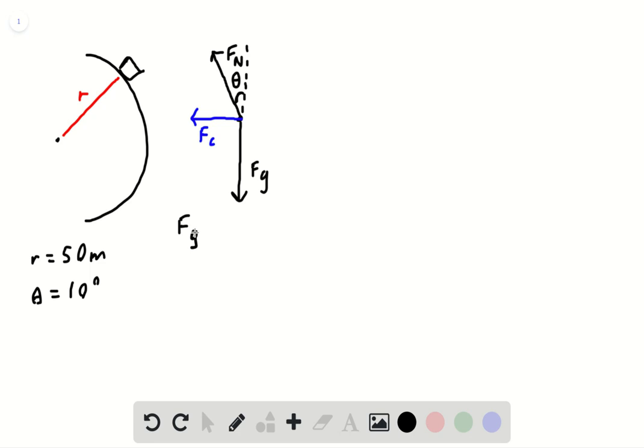In the y direction, we have Fg must equal to FN in the y direction because they are pointing in the opposite directions and will need to cancel out so that the car does not move in the y direction. So Fg can be rewritten as mg and FNy can be rewritten as FN times cosine theta. Notice it's cosine not sine because we are given this angle. And solving for FN, you get mg over cosine theta.